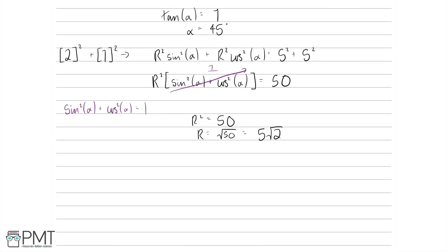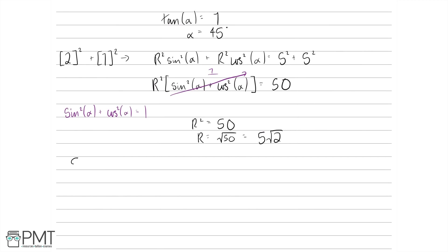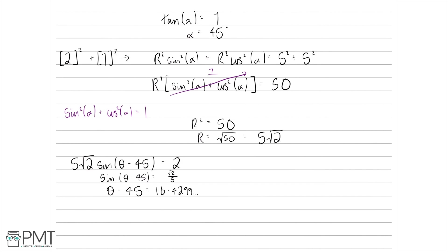So the expression simplifies to 5√2 sin(θ − 45) equals 2. Dividing both sides by 5√2, we get sin(θ − 45) equals 2 over 5√2, which simplifies to √2 over 5. Taking inverse sine of both sides: θ minus 45 equals inverse sine of (√2 over 5), which gives 16.4299...